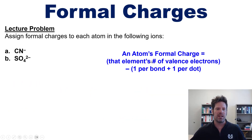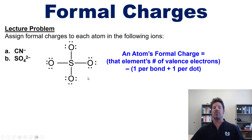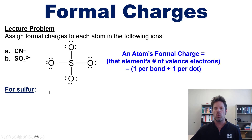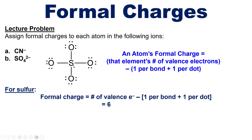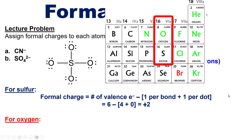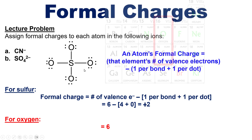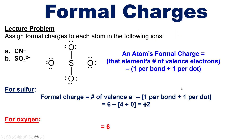Now let's assign formal charges to all the atoms in sulfate, SO₄²⁻, beginning by drawing its Lewis structure. Note this is not the only possible Lewis structure. For this Lewis structure, the sulfur atom's formal charge begins with its valence electrons — sulfur is in column 6A, so it has six valence electrons. In this Lewis structure, how many bonds go to the sulfur? One, two, three, four. How many dots? Zero. So its formal charge is six minus four plus zero, which equals positive two.